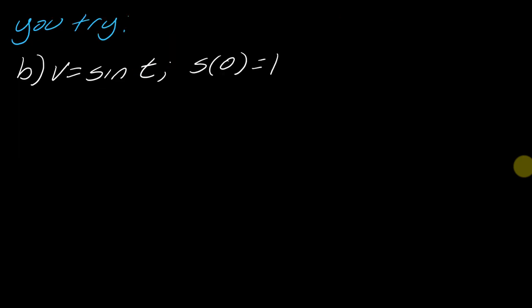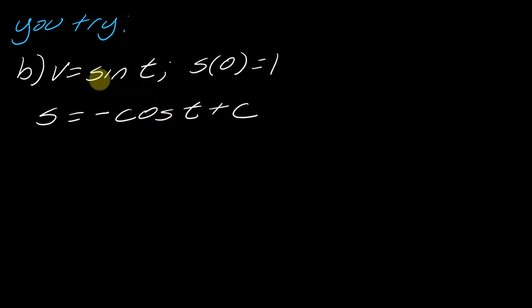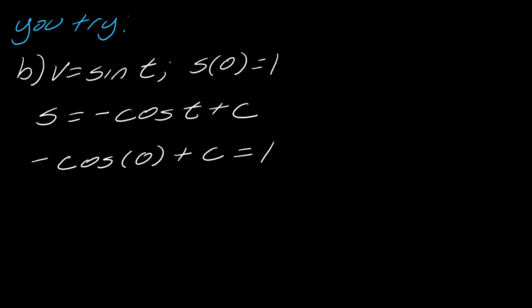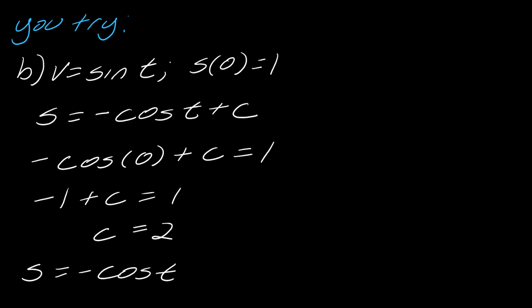One more example. The initial thought for unraveling this derivative is that it has to equal negative cosine of t plus c. Remember: the derivative of cosine is negative sine, so you need a negative in front to make it positive sine. Now plugging in zero: negative cosine of zero plus c equals one. Cosine of zero is one, so negative one plus c equals one, therefore c equals two. The final answer is s of t equals negative cosine of t plus two.